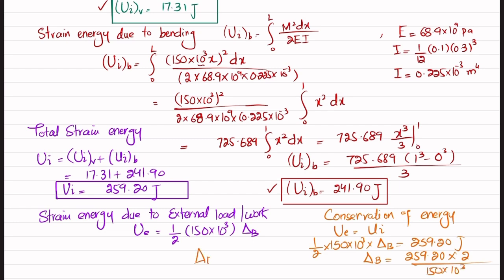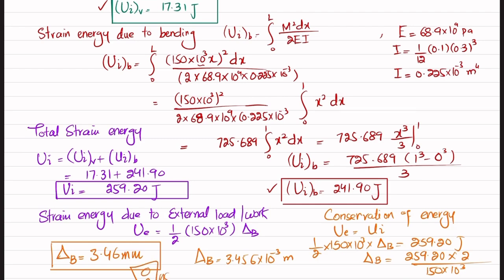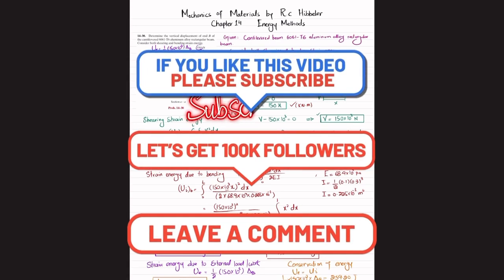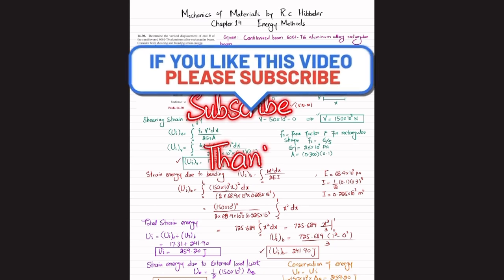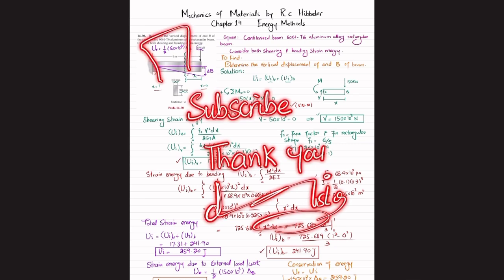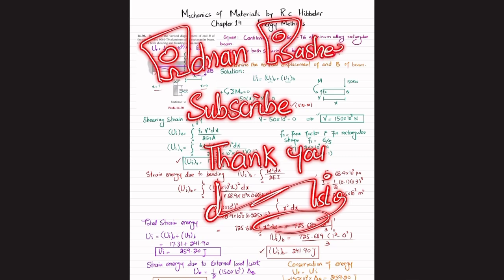Solving this gives the vertical displacement of point B as 3.456×10⁻³ meters, or delta B = 3.46 millimeters, which is the answer to Problem 14-30. I hope you enjoyed this video and learned from it. If you're new to my channel, please subscribe and press the bell icon for notifications. Ask questions in the comments, share my videos with friends, and thank you for your support.